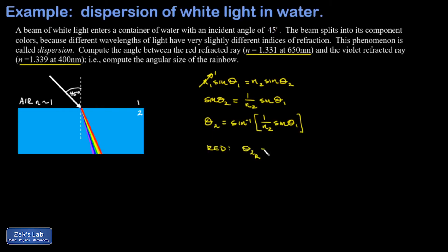and I get theta 2 red and that's the inverse sine of 1 over 1.331 times sine of 45 degrees. When I run the numbers on this I get 32.09 degrees. I'm just keeping a little extra precision because we're dealing with a pretty small effect